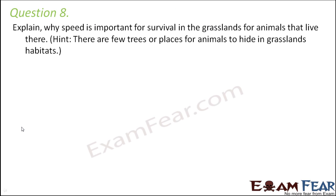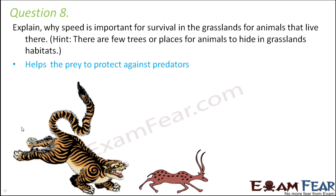Question number eight: explain why speed is important for survival in grasslands for animals that live there. Grasslands are areas where you mostly have grasses or short shrubs — there are no tall, huge trees. When there are few big trees, there are fewer places to hide. So if an animal wants to protect itself from a predator, the only option it has is to run — the animal has to be a fast runner. In a forest, animals can hide behind trees, but in open grassland with just grasses, they are visible to predators easily. So speed is very important because it helps the prey protect themselves from their predators.